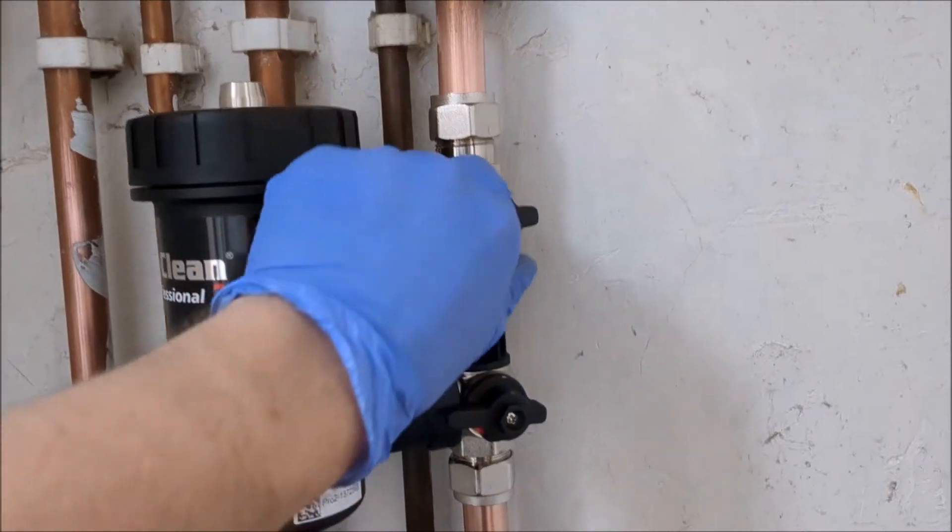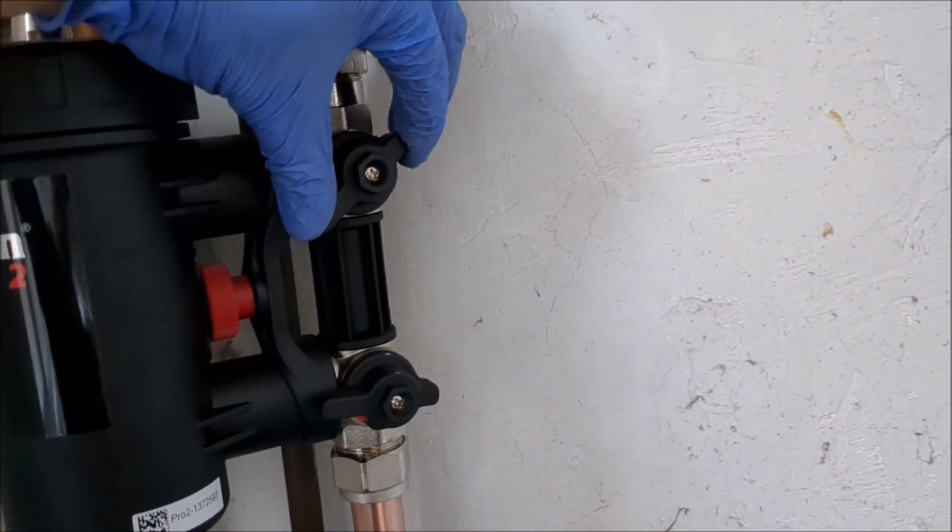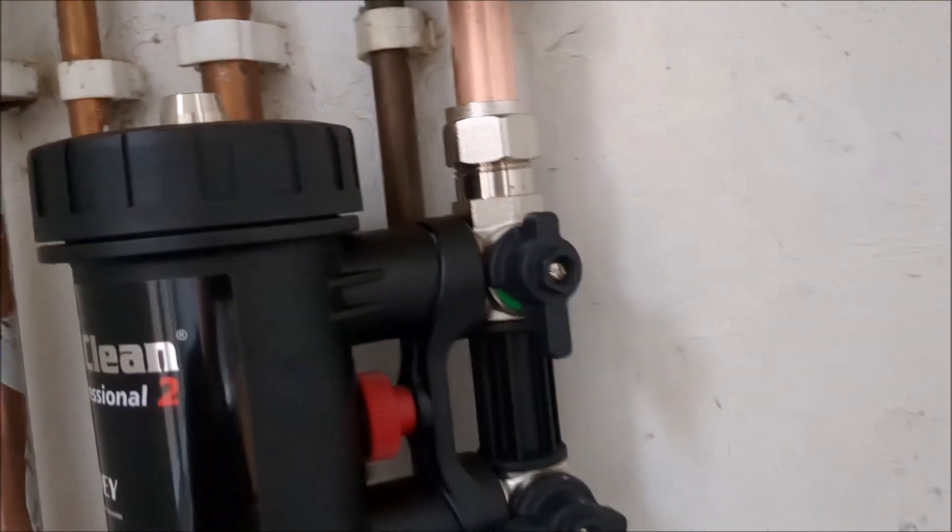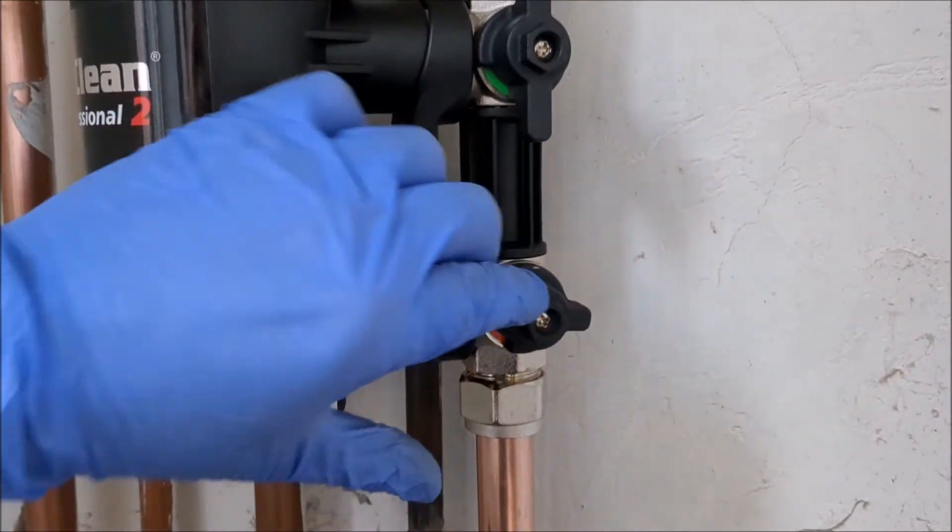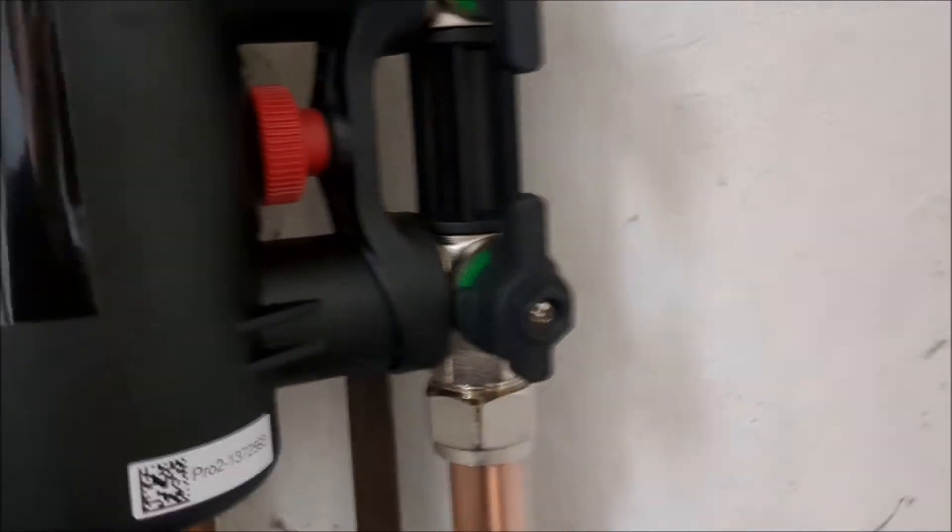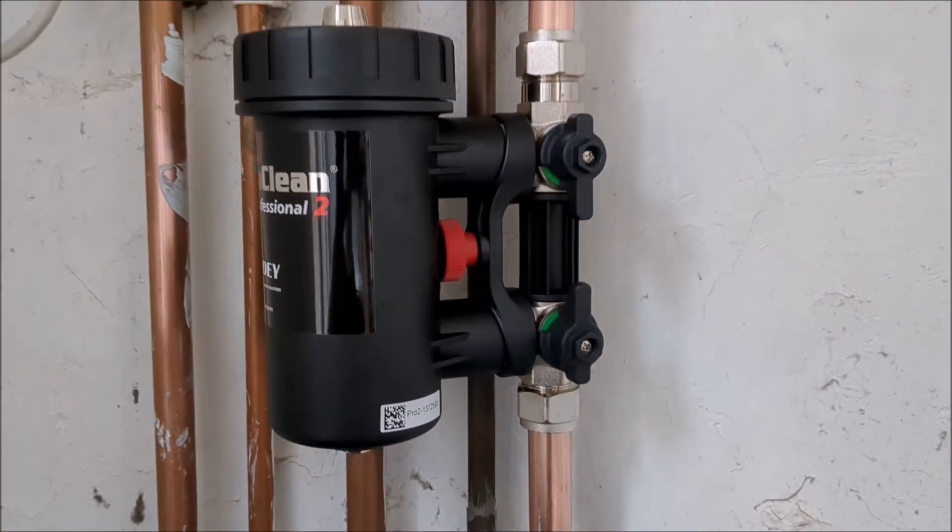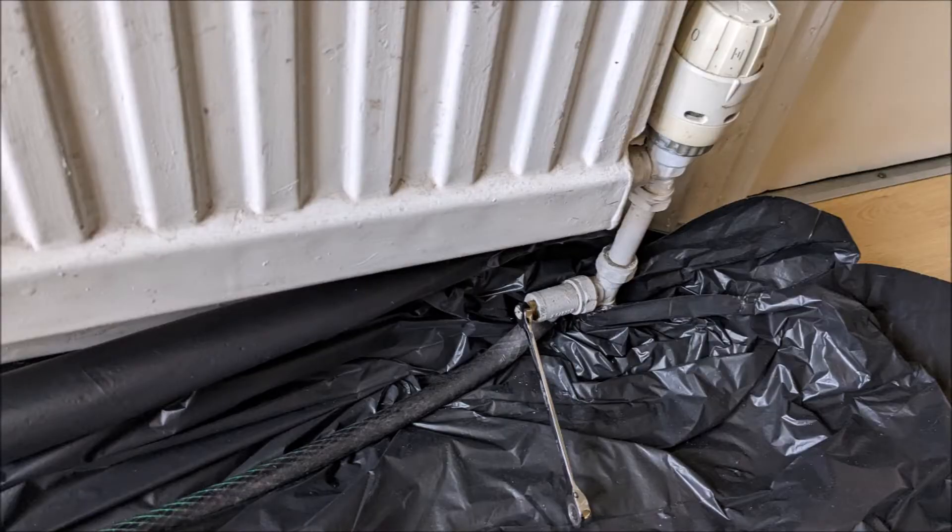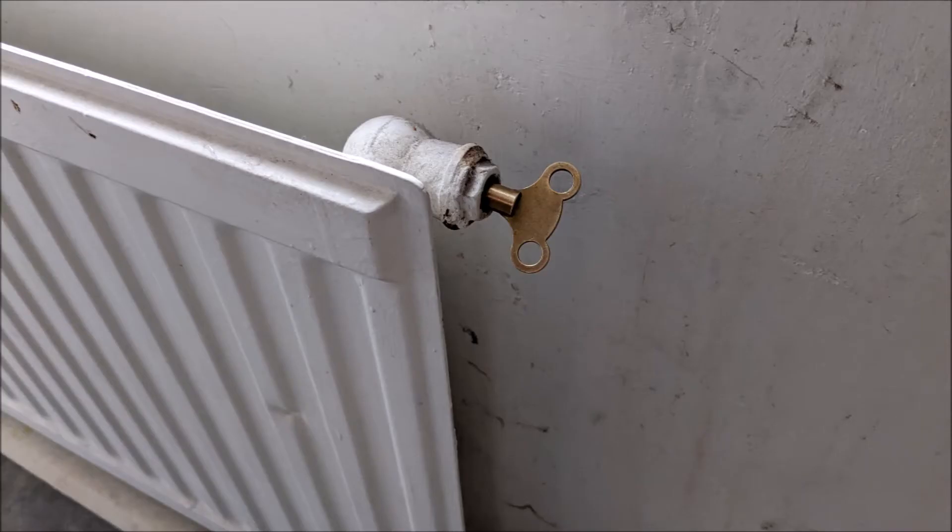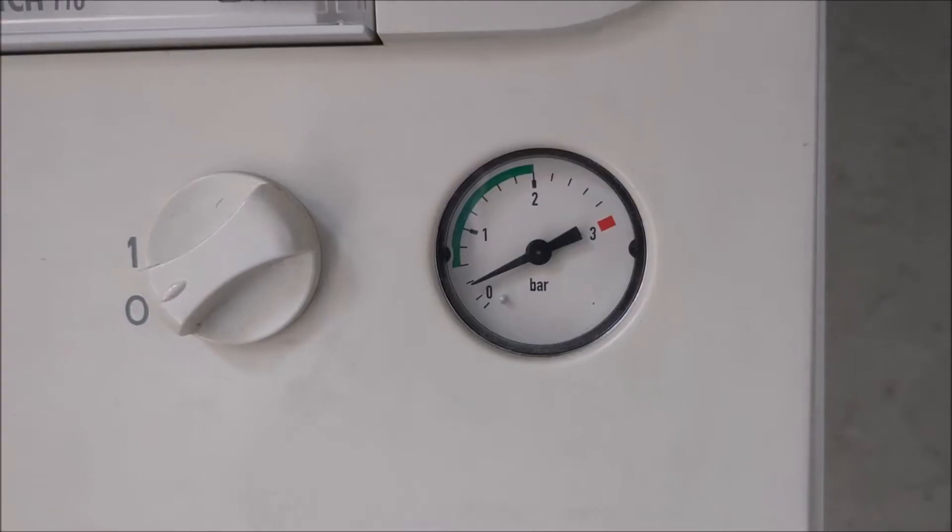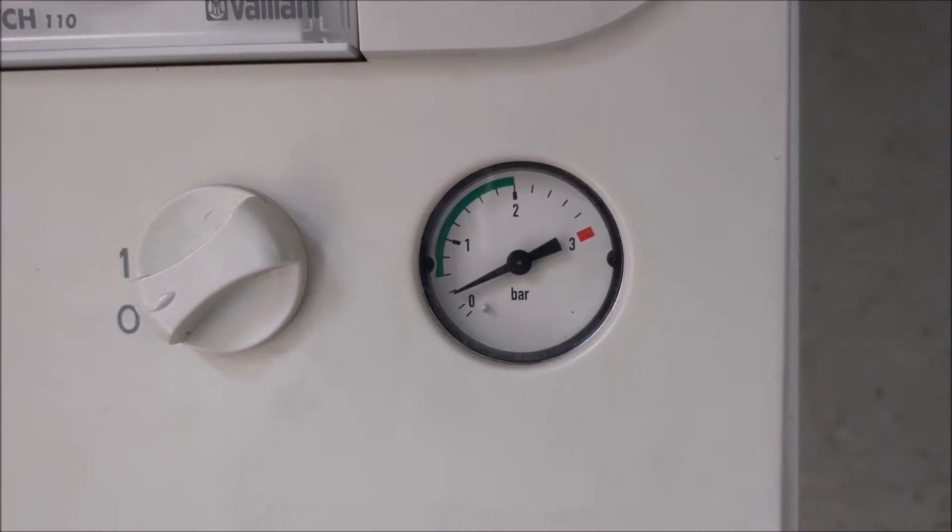Open the quarter turn isolation valves. To refill the system, close the drain valve and remove the hose pipe from the radiator. Make sure all the radiator bleed valves are closed. Use the filling loop to achieve the required pressure.